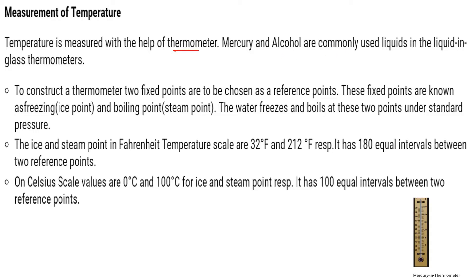Mercury and alcohol are commonly used liquids in glass thermometers. In a mercury thermometer, there is an initial marking, a final marking, and the mercury rises to show the temperature. In order to construct a thermometer, we need two fixed points as reference points — the freezing point (ice point) and the boiling point (steam point).